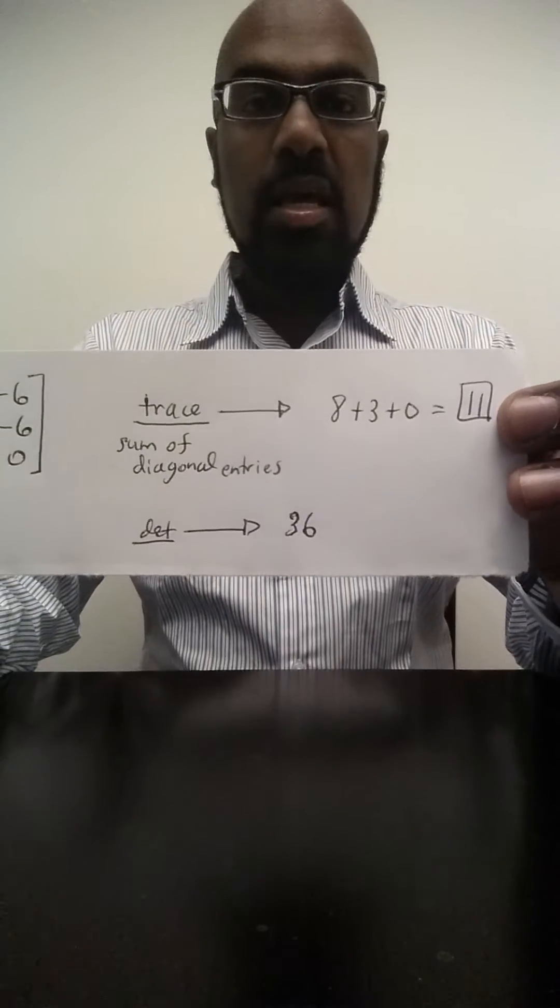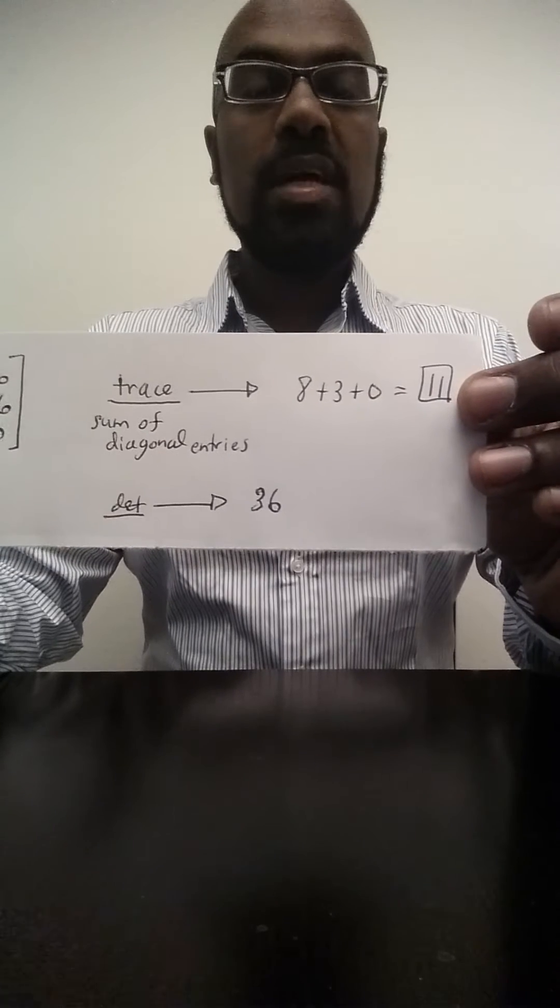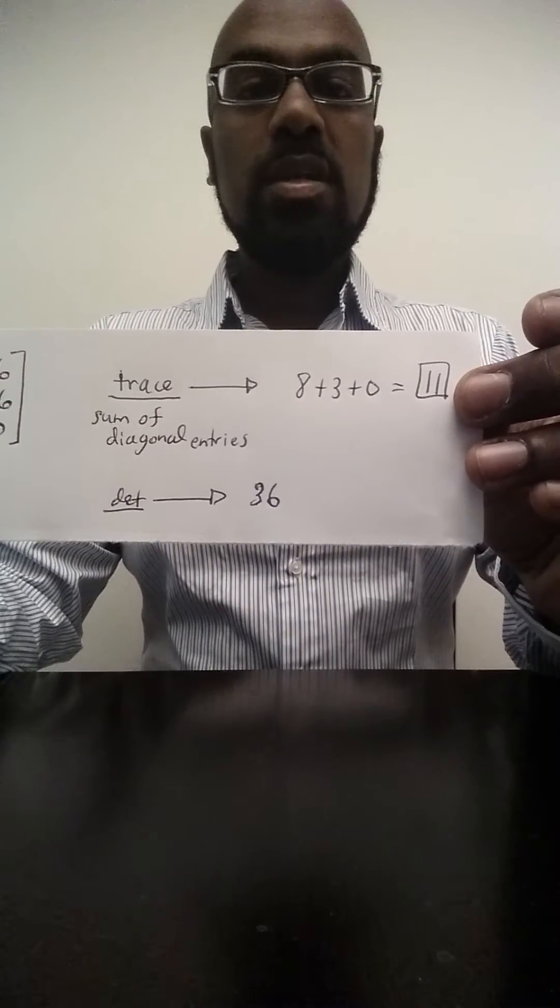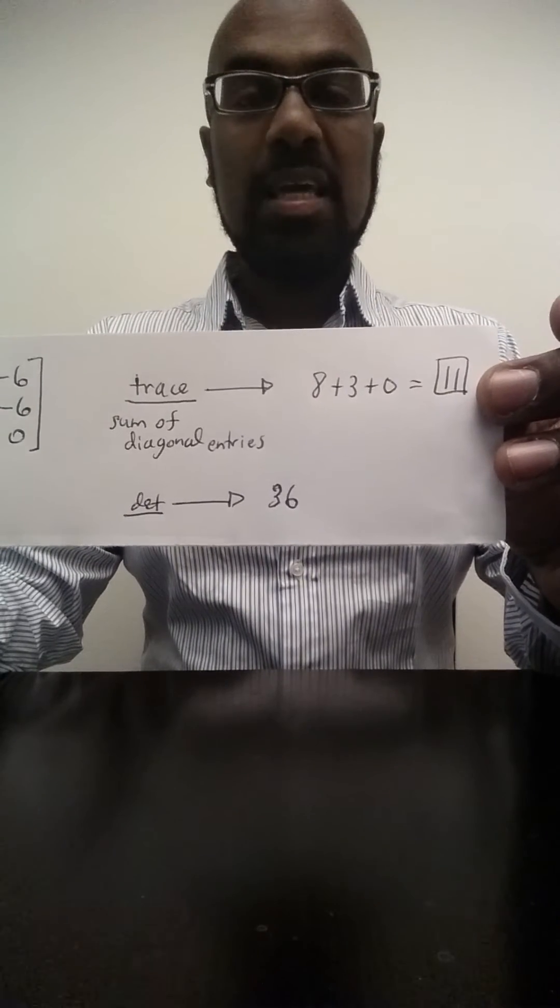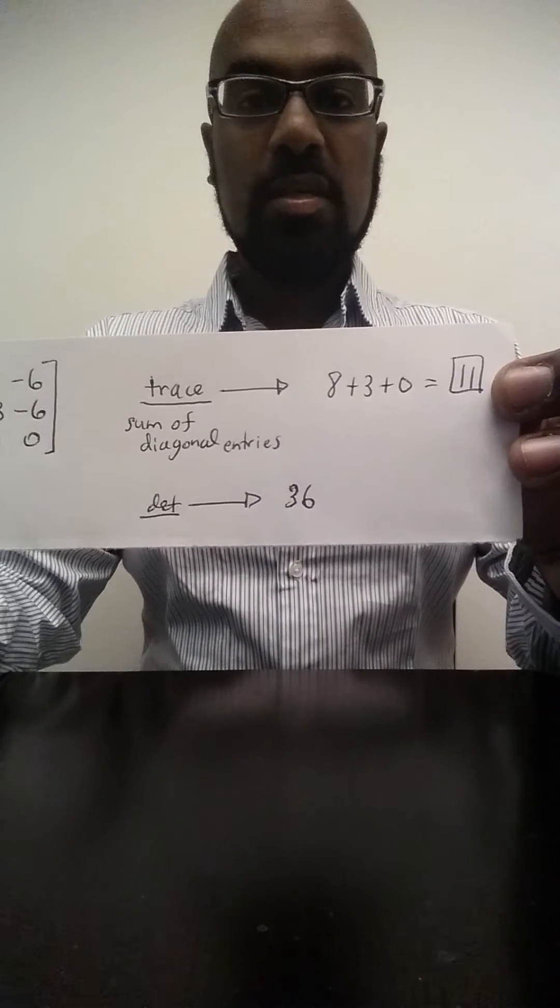But how does that actually help us in computing eigenvalues? Well, it turns out that in general the determinant of a matrix is the product of its eigenvalues with multiplicity and the trace is the sum of the eigenvalues with multiplicity.